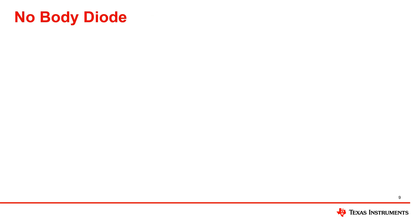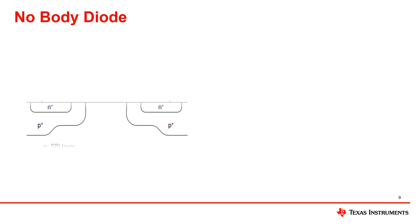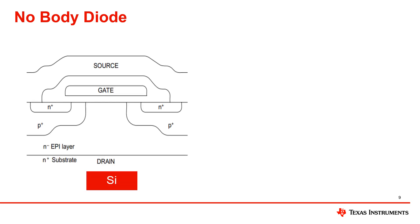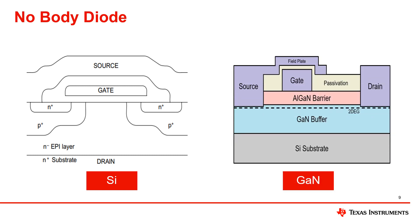We mentioned earlier that GaNFETs have no body diode. The body diode in silicon MOSFETs forms from the PN junction between the source and drain. However, we do not have said junction formation in GaNFETs, and that's why there is no body diode.